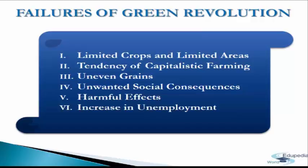The next failure is unwanted social consequences. The Green Revolution facilitated the transfer of large numbers of tenants and sharecroppers into agricultural laborers due to large-scale eviction of tenants by large farmers, who found large-scale farming to be highly profitable. The next failure is harmful effects — enhanced mechanization of farms resulted in huge numbers of farm accidents, and excessive use of chemical fertilizers and pesticides created problems of pollution and health hazards, raising questions of sustainability and environmental damage.